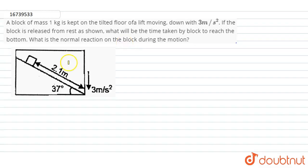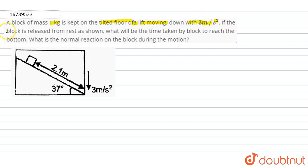If we look at this problem: a block of mass 1 kg is kept on a tilted floor in a lift moving down with acceleration of 3 meters per second squared. If the block is released from rest as shown, what will be the time taken by the block to reach the bottom? What is the normal reaction on the block during the motion?